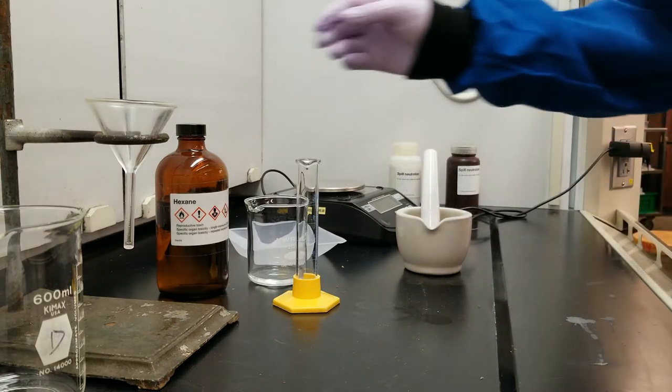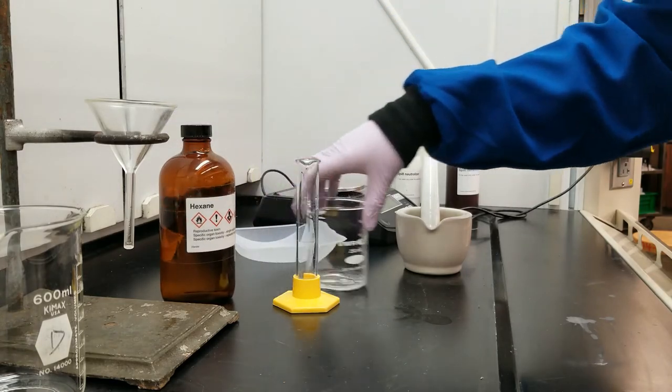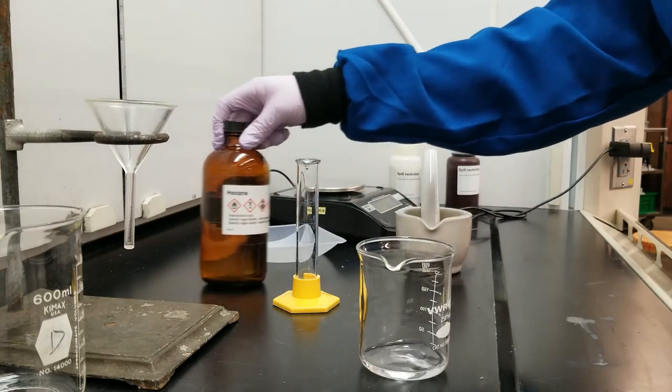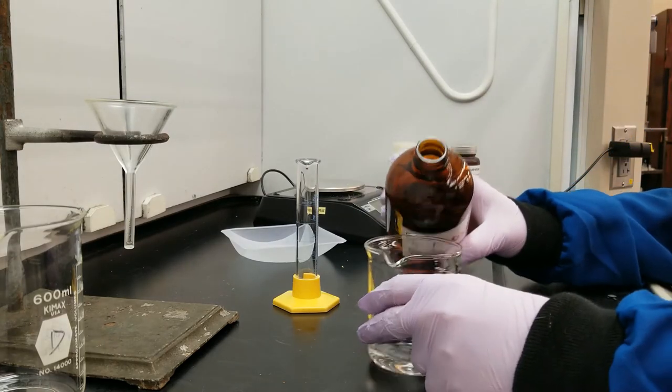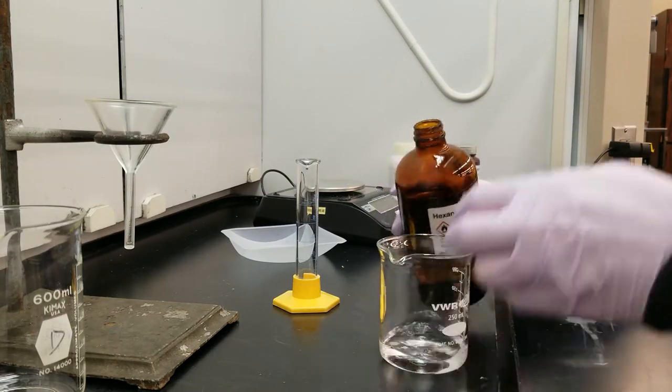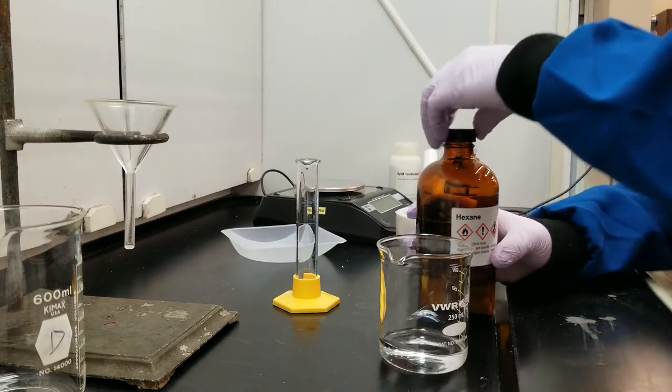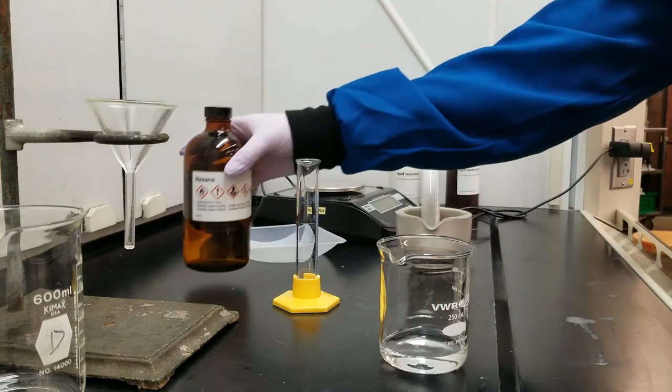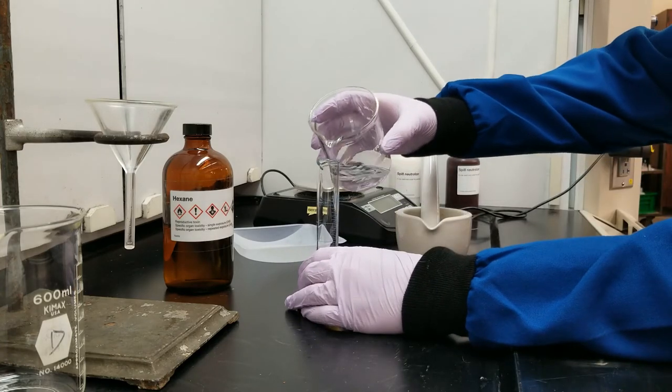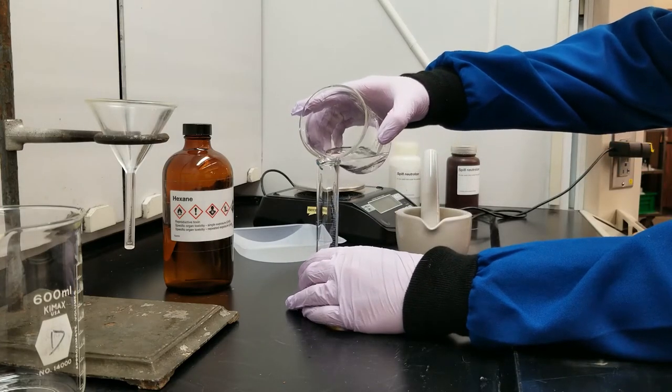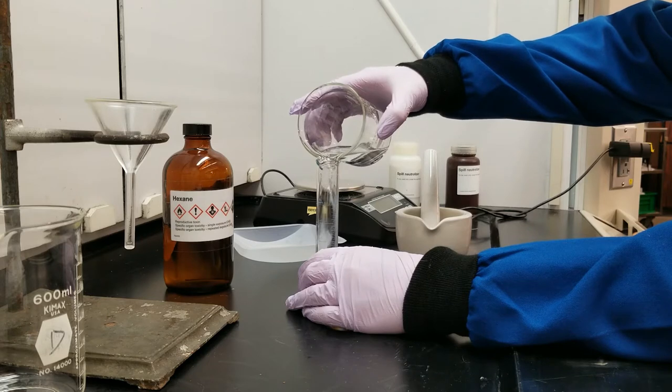My solvent today is hexane, so I'm going to get about 20 milliliters of hexane for my first addition. I'm pouring into a beaker because graduated cylinders are top heavy, and so it's more likely that I tip it over if I pour it directly from the solvent jar into my graduated cylinder.